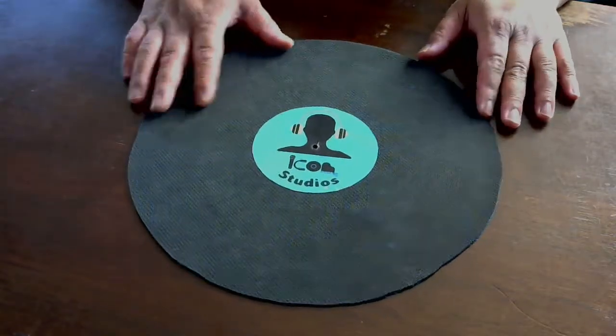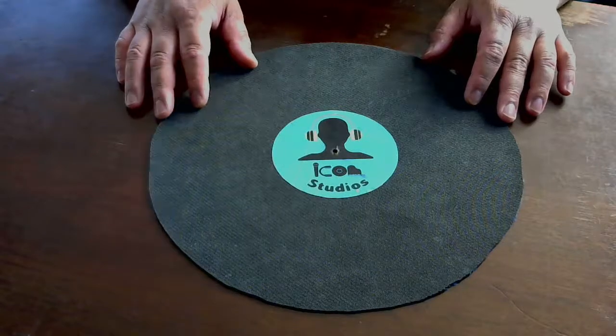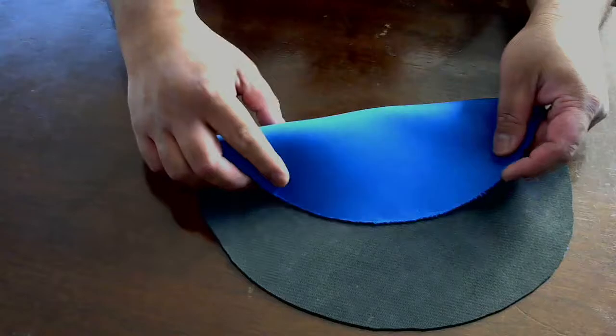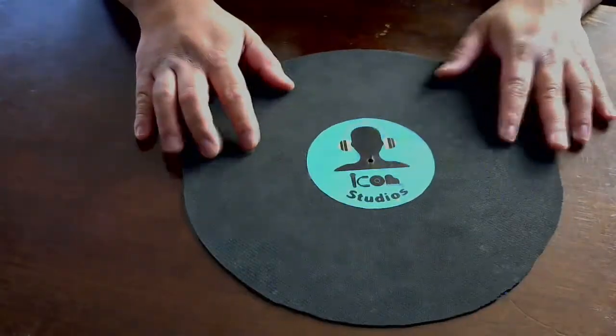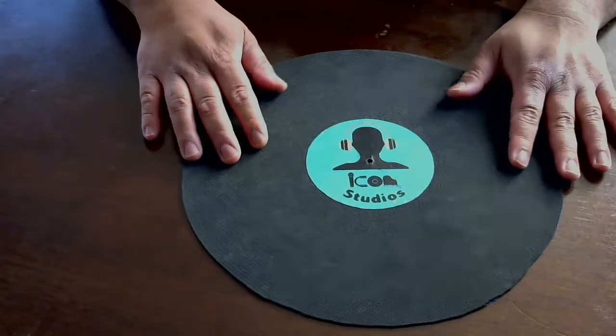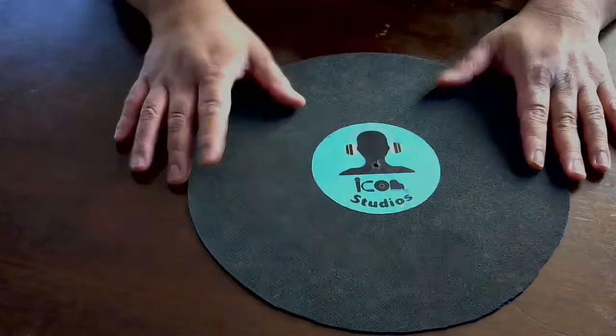First item is a record. Specifics on this are a 12-inch rounded mat with neoprene on one side and rubber on the other. But I do need the rubber to be printed on this side. I don't know if that's possible or if there's a sublimation process or if we just got to go with stickers.